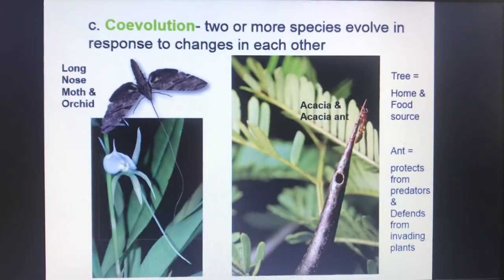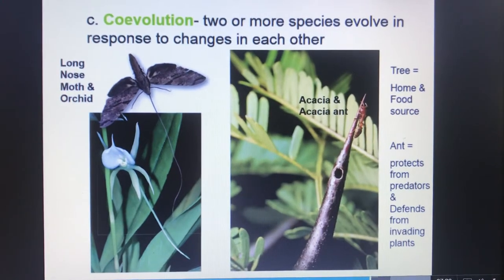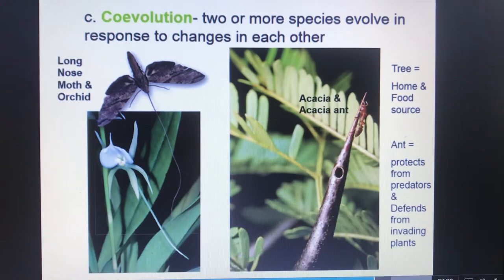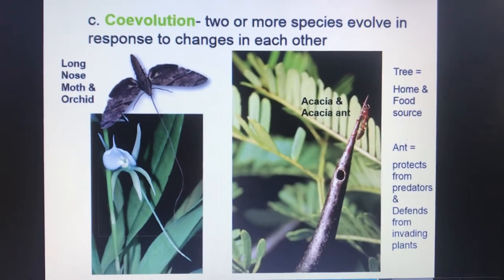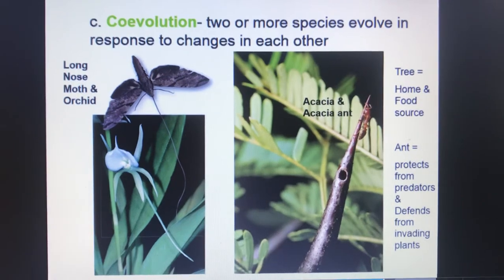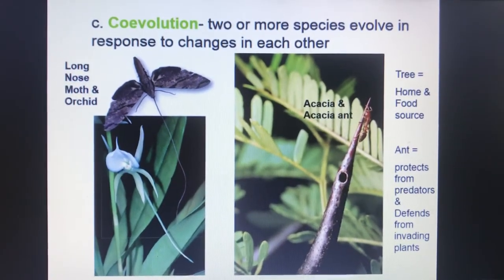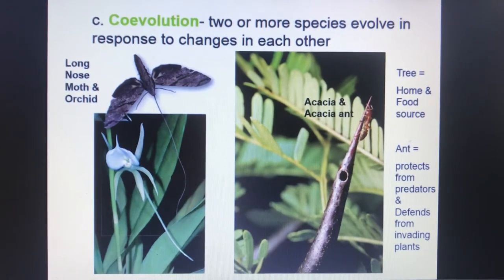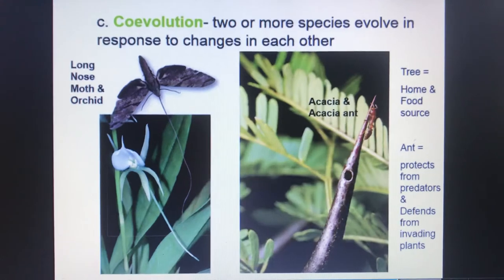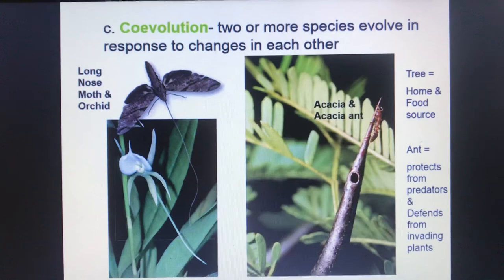Co-evolution is when two or more species evolve in response to changes in each other. The classic example is on the right-hand side: the acacia tree and the acacia ant. The acacia tree provides a home and a food source for the ant, and the ant in turn protects the plant from invading predators and competing plants. Almost like a symbiotic relationship — they're evolving together.